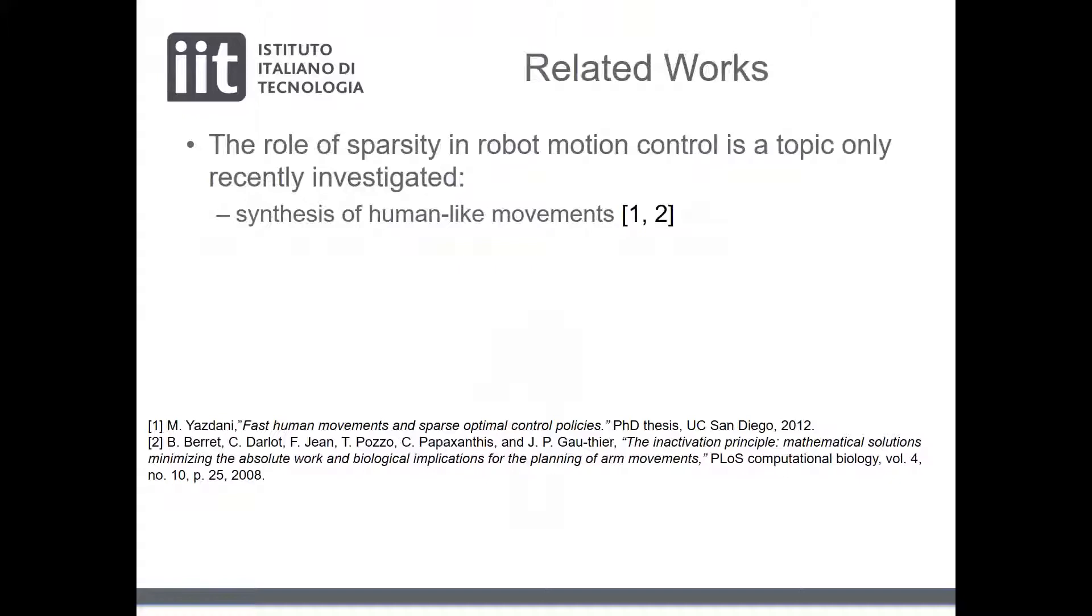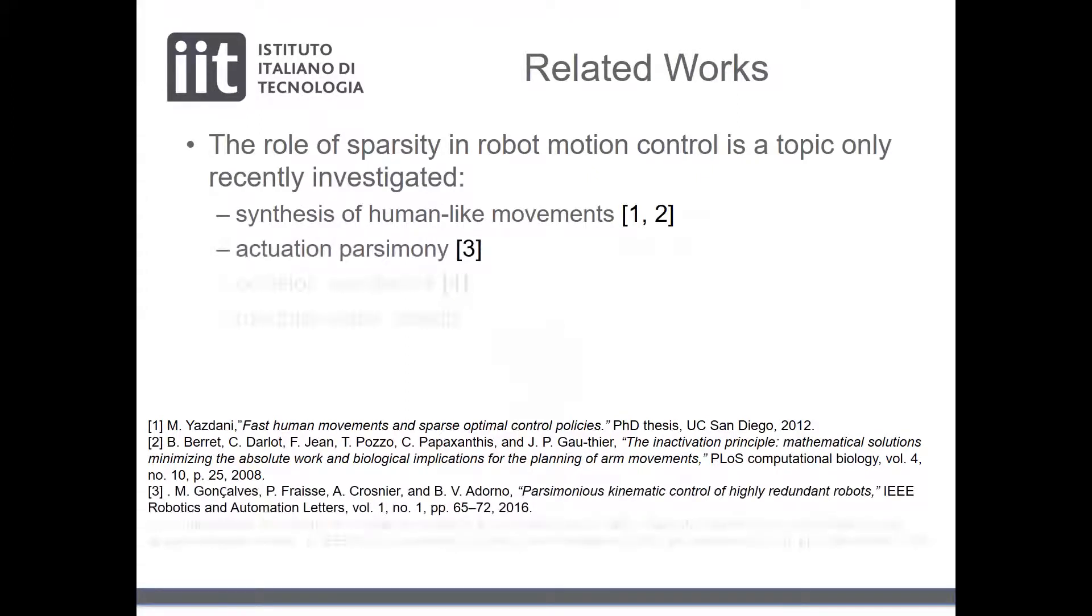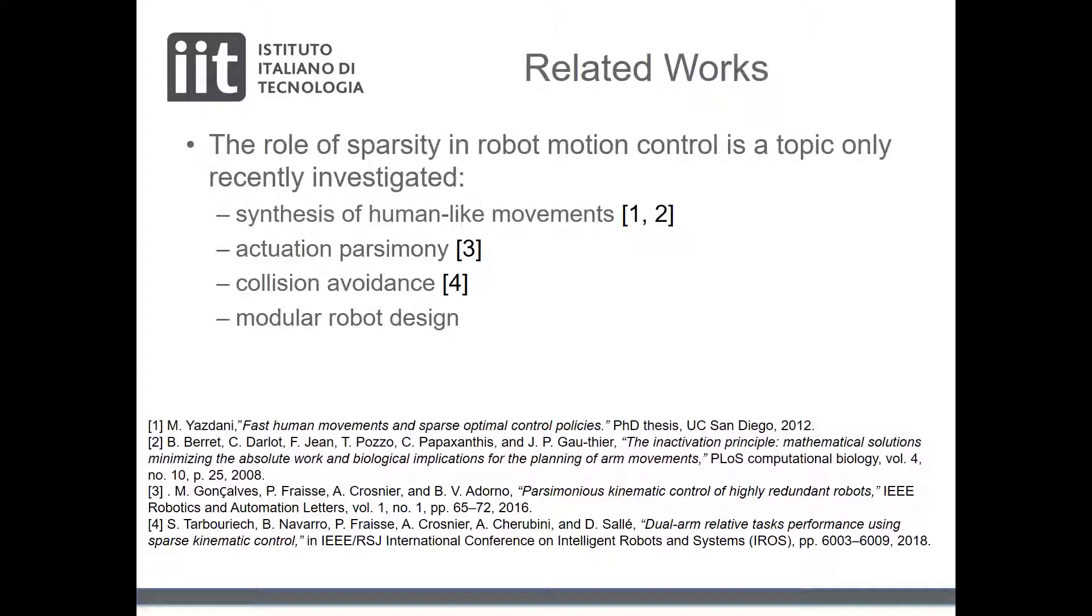Sparsity in robot motion generation is a topic recently investigated for the synthesis of human-like movements, actuation parsimony, collision avoidance, and modular robot design.